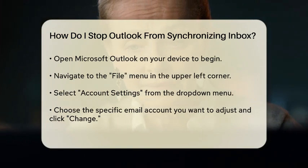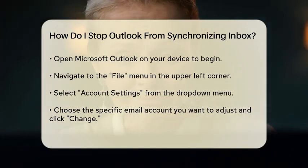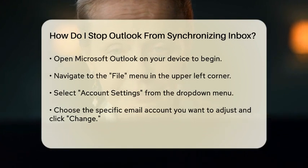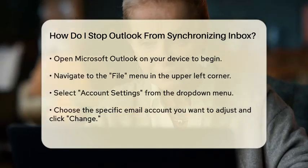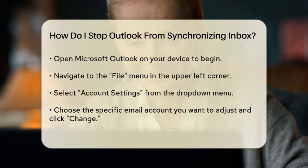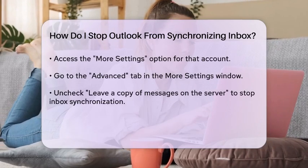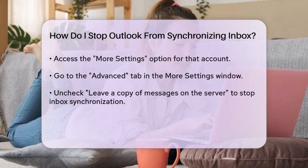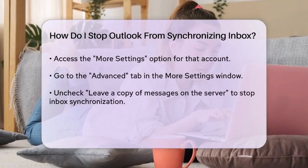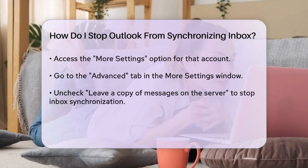In the Account Settings window, you will see a list of your email accounts. Choose the account for which you want to stop synchronization and click on Change. This will open a new window with various settings for that account. Look for an option that says More Settings and click on it. In the More Settings window, navigate to the Advanced tab.